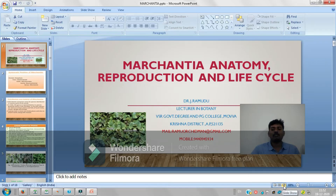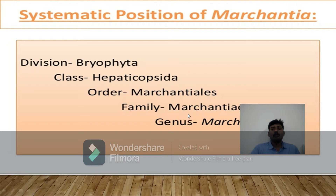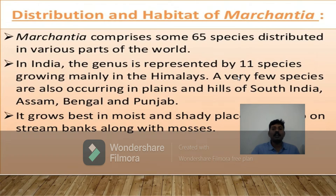So in this video we shall discuss about Marchantia life cycle. Marchantia is a bryophyte. When we observe the systematic position of Marchantia: kingdom Plantae, division Bryophyta, class Hepaticopsida, order Marchantiales, family Marchantiaceae, and the genus Marchantia. Marchantia polymorpha is a very important species in Marchantia.